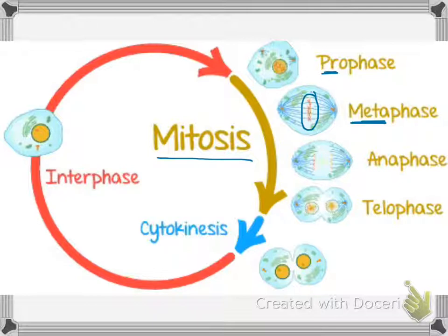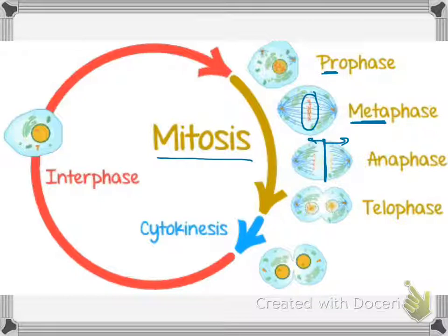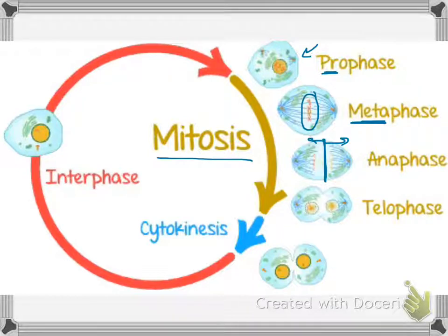Anaphase is where the chromosomes split and half of those copied chromosomes go to one side and the other half go to the other. Remember that the chromosomes were copied during prophase while it was preparing, so you have two copies of the exact same chromosomes. They all line up in the middle and then split so that each side of the cell now has an exact duplicate copy of those chromosomes.